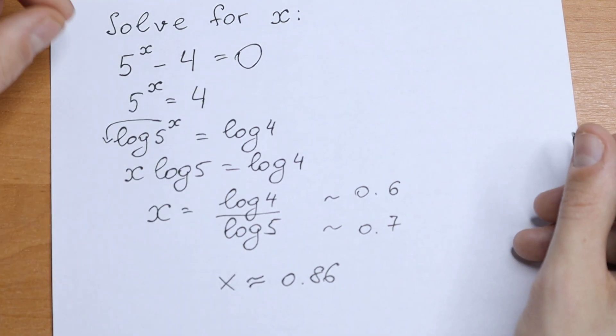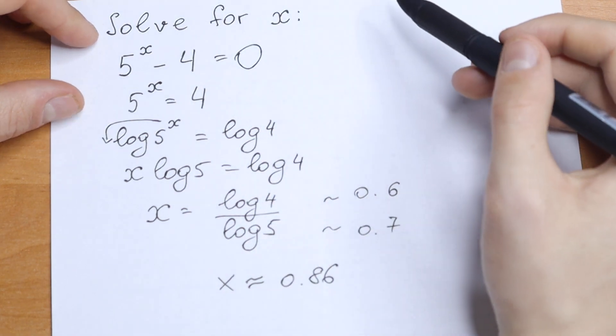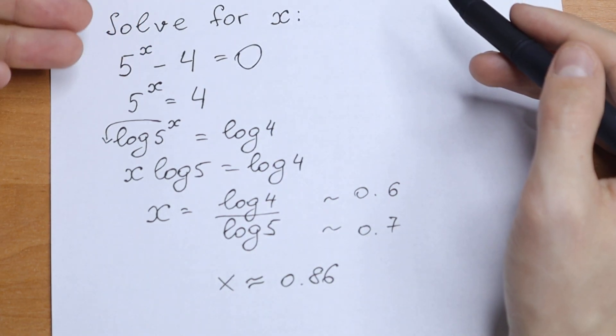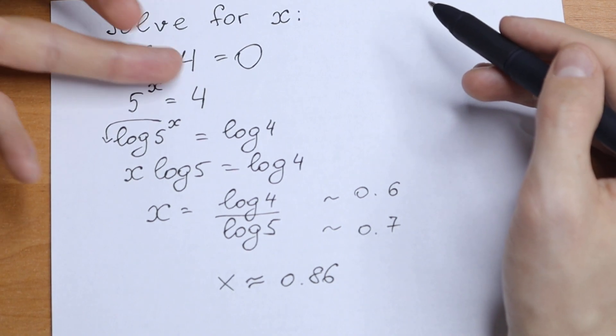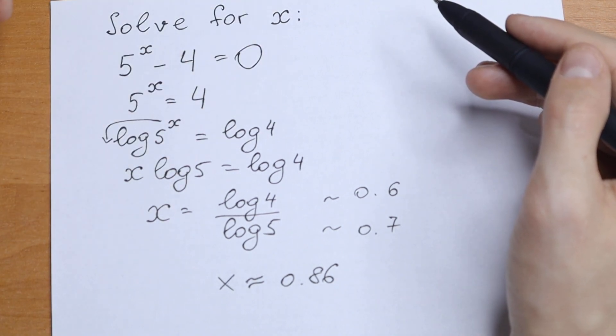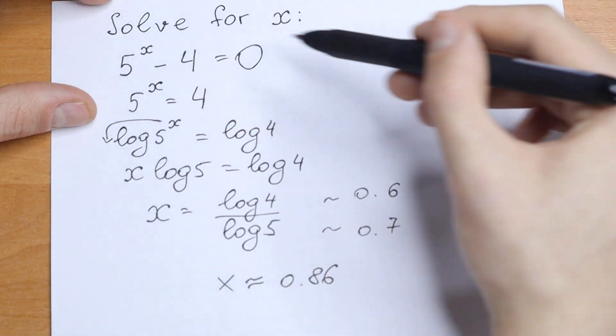And this will be our answer. And it looks right because our x cannot be greater than 1. Because if we have greater than 1, we will have 5, we will have 25, we will have 125 minus 4. This will never equal 0. So our x should be less than 1.